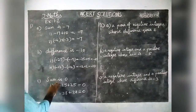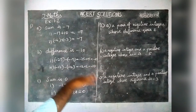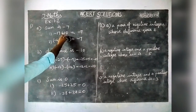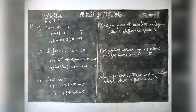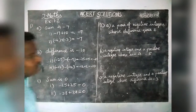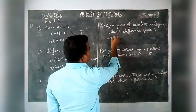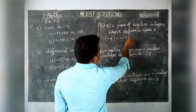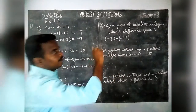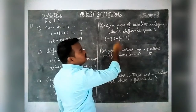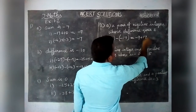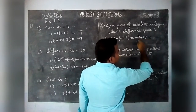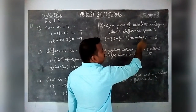In the second question, they have given a condition. The first part asks for a pair of negative integers whose difference gives 8 — both must be negative integers. So: minus 9 minus (minus 17) equals minus 9, and minus of minus becomes plus 17. The difference is 17 minus 9, which equals 8. Since 17 has a plus sign in front, the answer is positive 8.